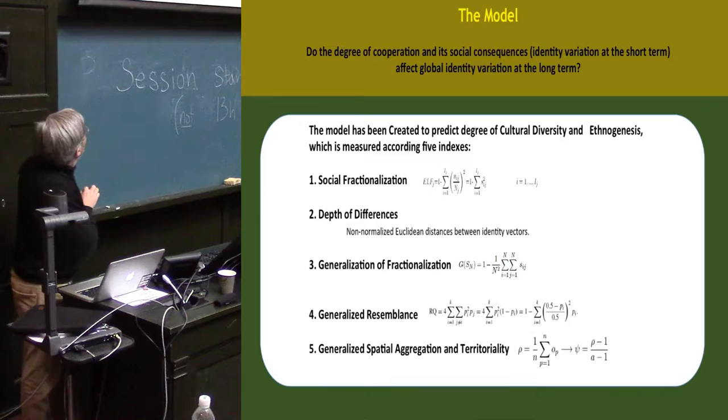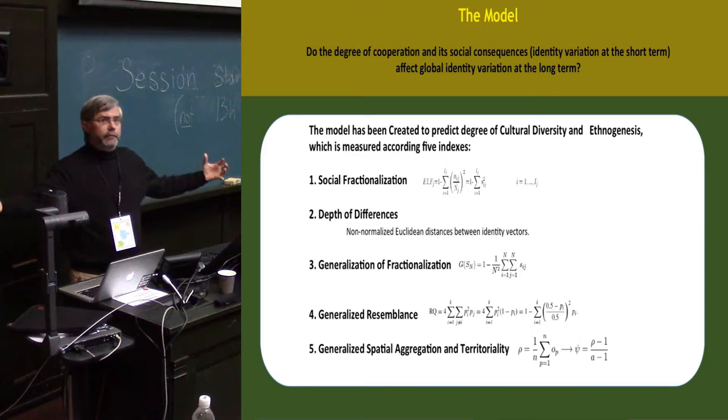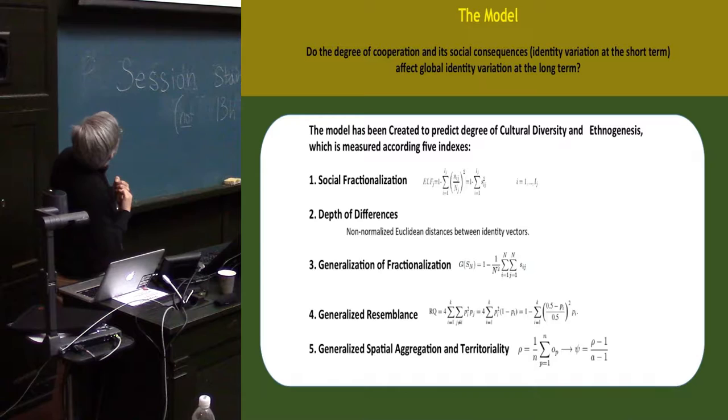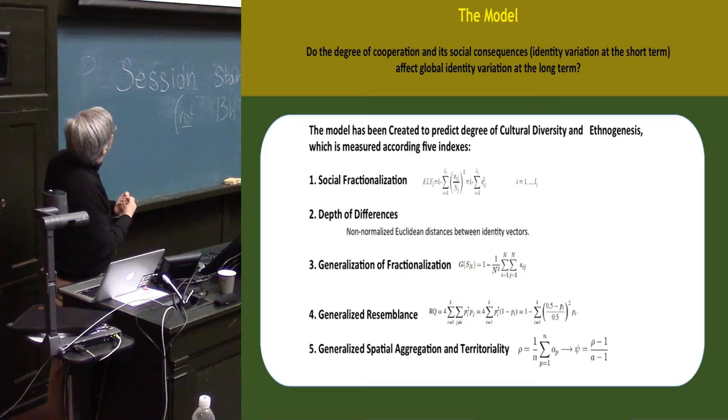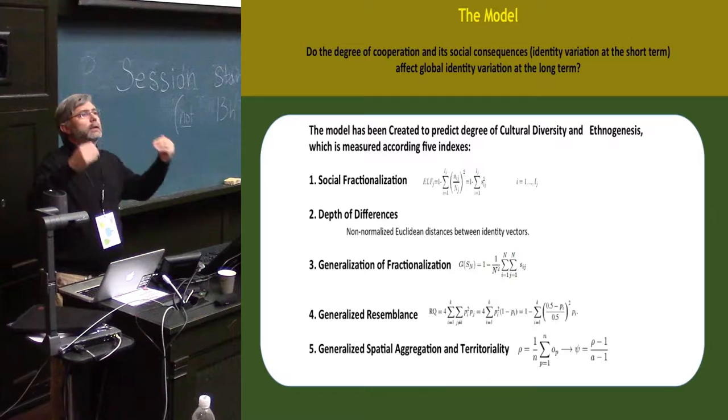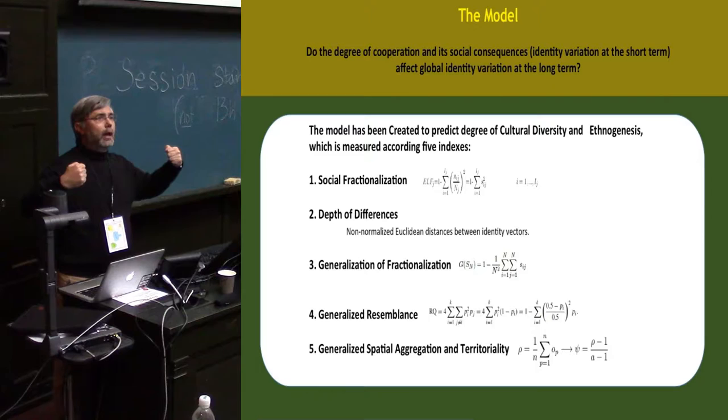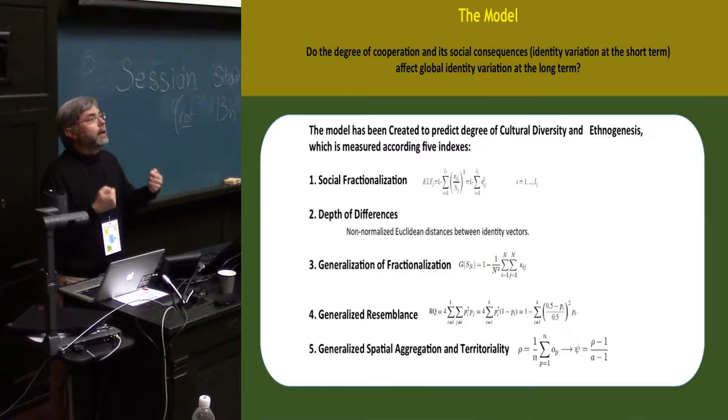These are the five ways we measure results. Since we're looking for cultural diversity, we should measure how different groups are. We're studying socio-fractionalization, depth of differences, generalization of fractionalization, generalized resemblance, and a new index of generalized spatial aggregation and territoriality. These indexes exist in anthropological and sociological literature, mostly from comparing languages. Our interest is to understand if social indexes can monitor what the system is doing.